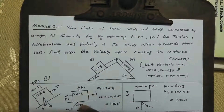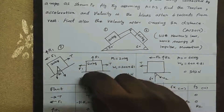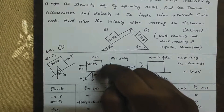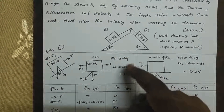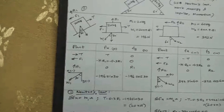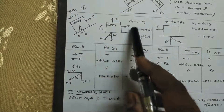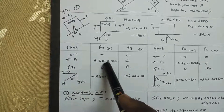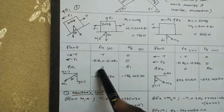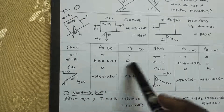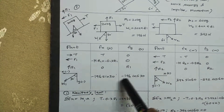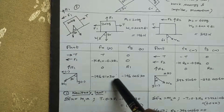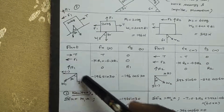This is the free body diagram. For the 20 kg block, the weight distribution is resolved into components. At 30 degrees inclination, in the x-direction we have T, then minus mu times R1 (that is minus 0.3 times R1). In the y-direction: R1 minus 196 cos theta equals 0; in the x-direction: minus 196 sin theta.